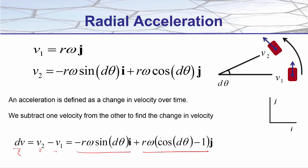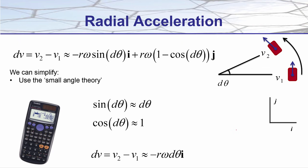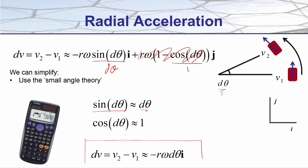It still looks complicated, but we can simplify. We're only taking a snapshot over a small angle between two positions. If you check your calculator: sin of a very small angle is approximated very well by that small angle itself, and cos of a small angle is approximated very well by 1. So I replace sin(dθ) with dθ and cos(dθ) with 1. The j terms then give 1 minus 1, which cancels out entirely. Written neatly, we have a simplified expression for the change in velocity.